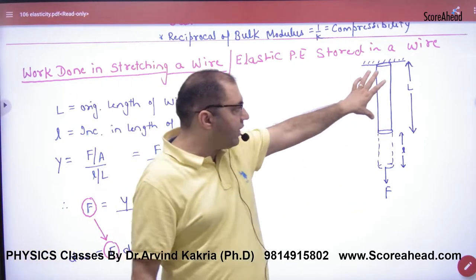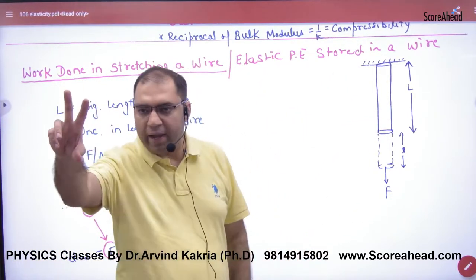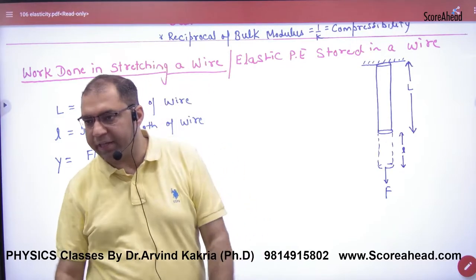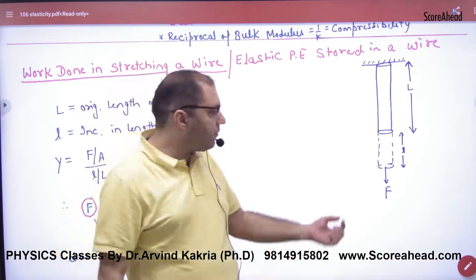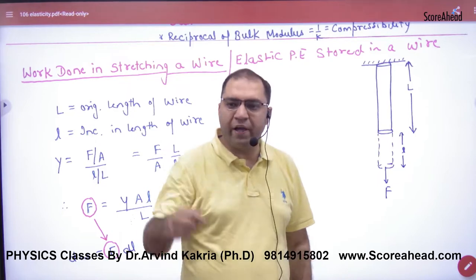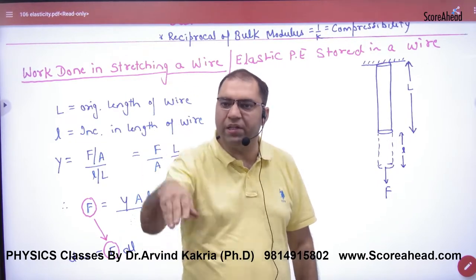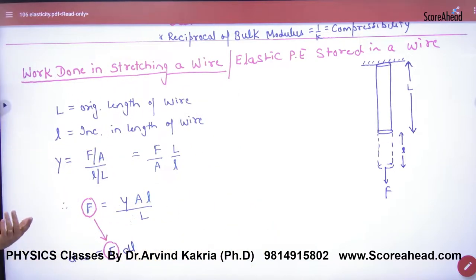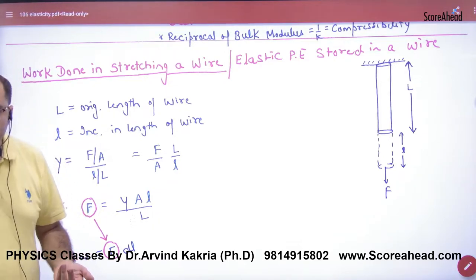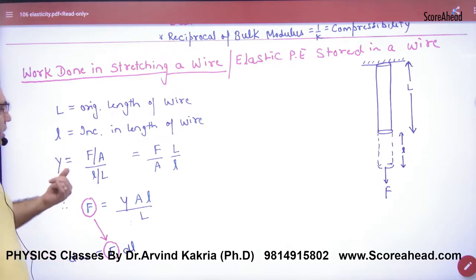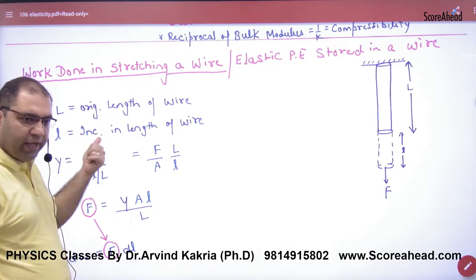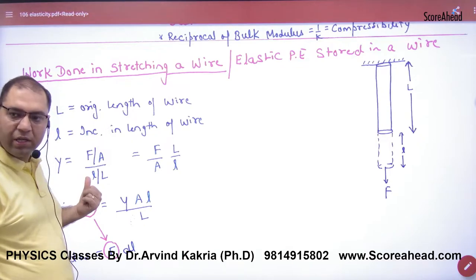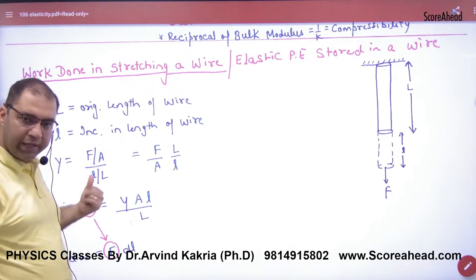Inside this wire, whose length is capital L — important mark in school — the length is capital L. You apply a force to it, and this wire increases by small l, which is the increasing length. Now, because the wire is elastic, it has Young's Modulus Y. Young's Modulus is defined as: Y = (Force / Area) × (capital L / small l). We rearrange this to get the force value.